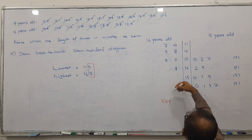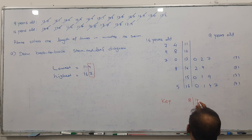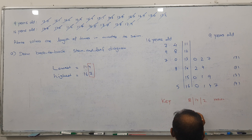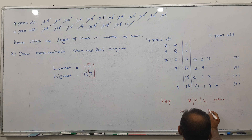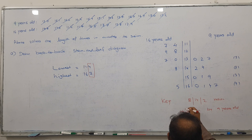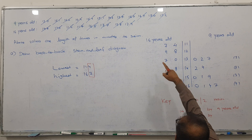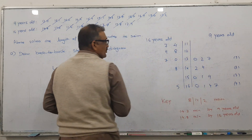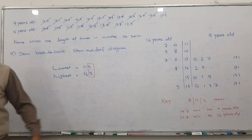Now write the key — please be attentive. I'll take this sample: 8 | 14 | 2 means — the right-hand side stands for 9-years-old, so it means 14.2 for the 9-year-old student. And 14.8 means by 16-years-old. So the idea is clear, and this is the whole concept of back-to-back stem-and-leaf diagram.